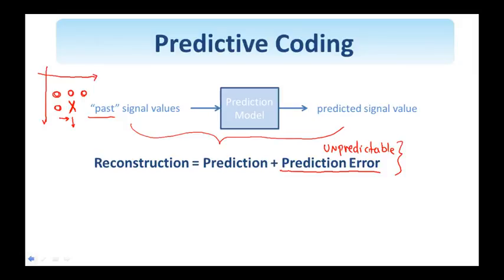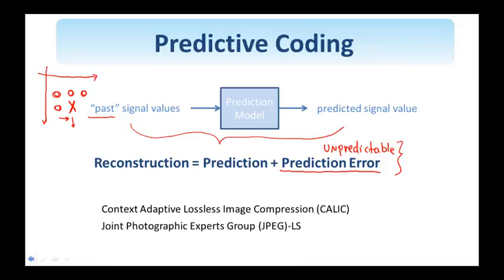An algorithm for lossless image compression based on a heuristic prediction model is KALIC, Context Adaptive Lossless Image Compression. Also JPEG, the Joint Photographic Experts Group, has produced lossless image compression standards under JPEG-LS. We will discuss lossy JPEG next week. This is probably what most people are familiar with. But I will briefly here discuss a version of JPEG-LS.